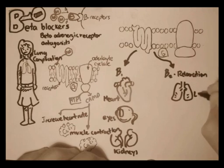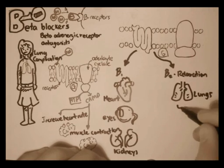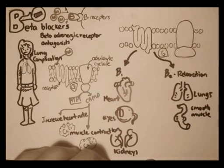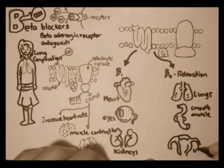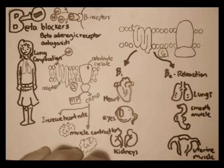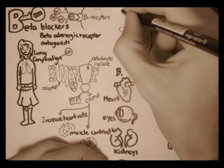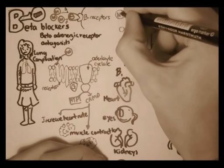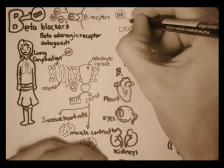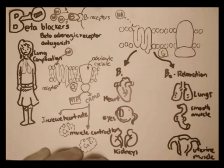Beta type 2 receptors are mostly found in different organs such as the lungs, smooth muscles, and uterine muscles. These beta type 2 receptors usually cause relaxation, so you can see why taking beta blockers can cause severe lung hypertension.